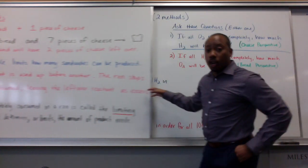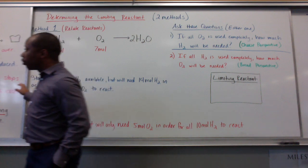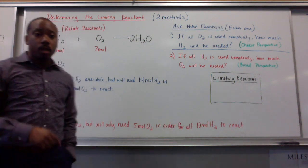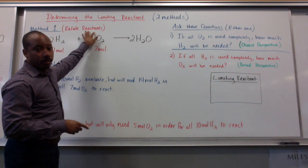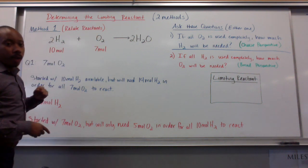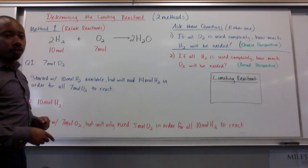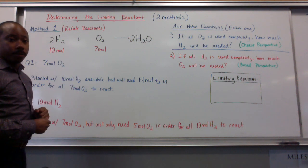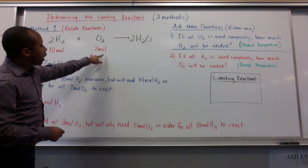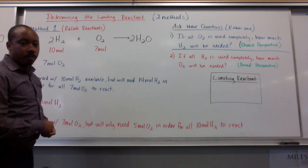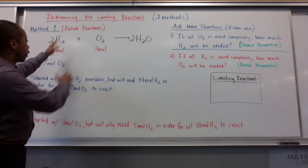Now, we can determine the limiting reactant in a chemical reaction using two methods. The first method is by relating your reactants. Here's my chemical equation. I have hydrogen gas reacting with oxygen gas, creating water. I have 10 moles of hydrogen gas initially, and I have 7 moles of oxygen gas initially.